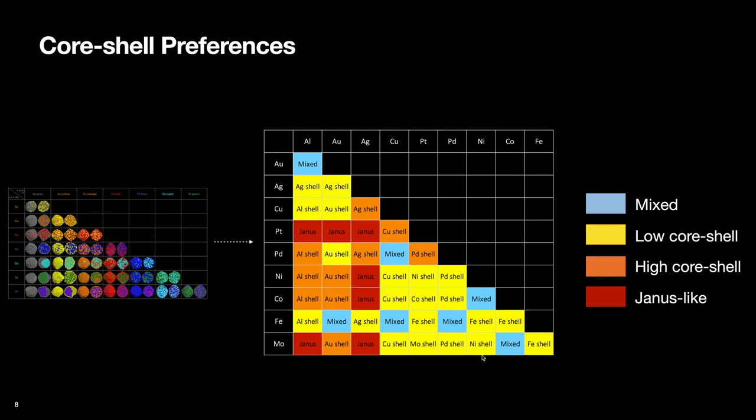So what we did is that we converted the MD results into a table that shows the equilibrium structure of each combination, and which metal segregates on the surface or forms the shell.